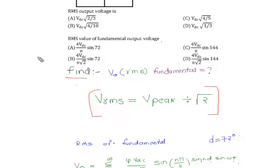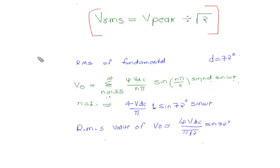The formula for RMS value of output voltage is: V_naught = summation for n = 1, 3, 5, ... to infinity of (4Vdc / nπ) × sin(nπ/2) × sin(nδ) × sin(ωt).